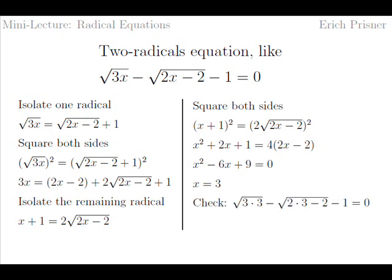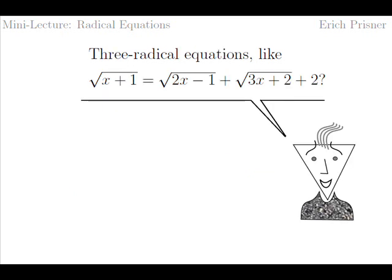Which checks: square root of three times three minus square root of two times three minus two minus one equals zero. Now, with equations with three radicals, such as square root of two x minus one equals square root of two x minus one plus square root of three x plus two plus two,